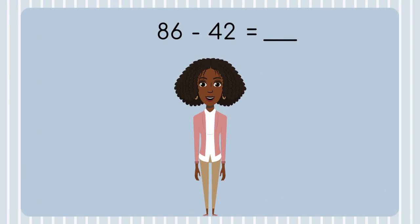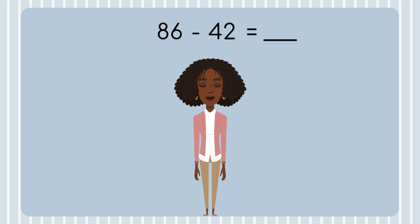Let's begin with this equation: 86 minus 42. I know these numbers are pretty big, but don't worry — I'll break it down and show you a strategy that'll make subtracting two-digit numbers super easy. First, I'm going to create a place value chart for my numbers.